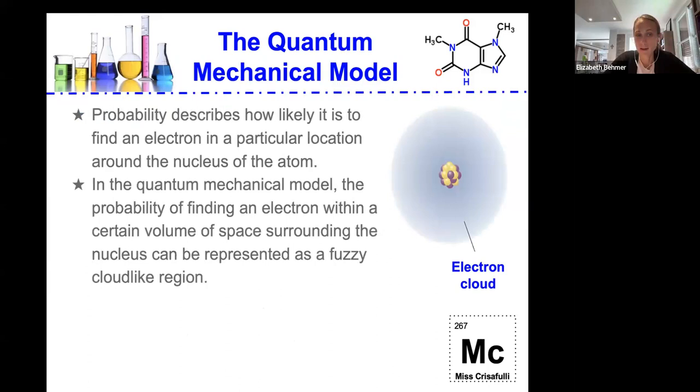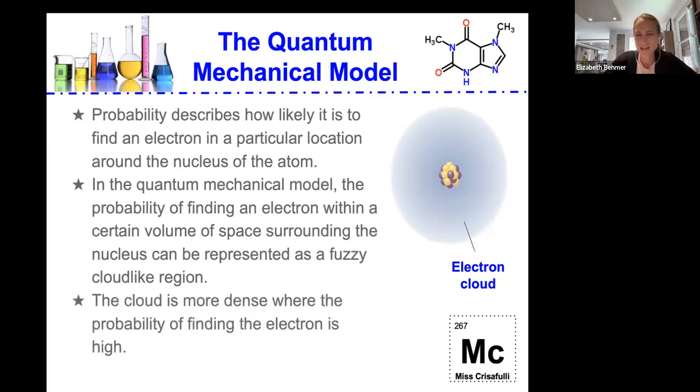And in this model, the probability of finding an electron within a certain volume of space surrounding the nucleus can be represented as a fuzzy cloud-like region. And the cloud is more dense where the probability of finding the electron is high.